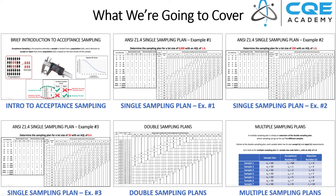Let's quickly review the agenda for today's lecture. I'm going to start with a brief intro to acceptance sampling — the history, the background, and the approach — and then we're going to go through a few different examples. The most popular standard for acceptance sampling is ANSI Z1.4, which is the standard for attribute data.